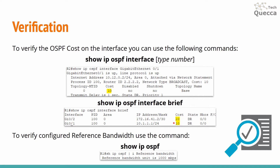To verify the configured reference bandwidth, use the command show ip ospf. In the output of this command you can find the reference bandwidth unit and your configured reference bandwidth value.